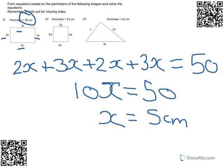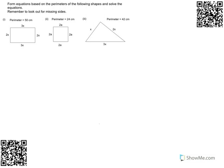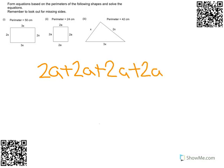Let's have a look at the second question. We've got what looks like a square. Well it is a square. And we're told that we've got four sides that are 2a. So you've got 2a plus 2a plus 2a plus 2a. And we're told that the perimeter of this shape is 24.